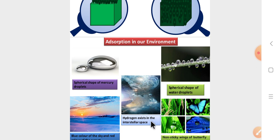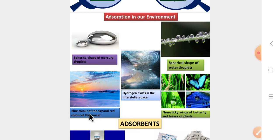Next, the spherical shape of the water droplets on the leaves and the stem also. Next, hydrogen exists in the intracellular space. Next, the blue color of the sky and red color of the sunset - it is also adsorption, and non-sticky wings of the butterfly and leaves of the plant. This is one of our environmental adsorption examples.